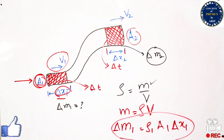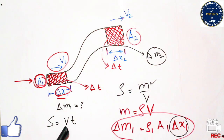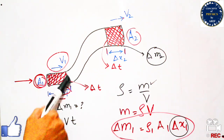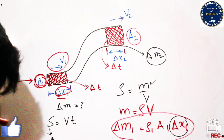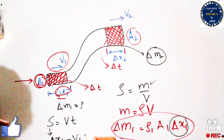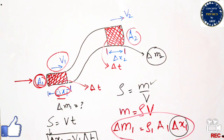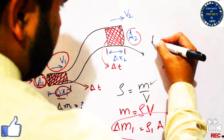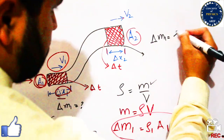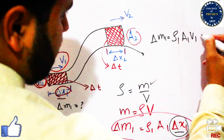We can simplify this using the relation: distance equals velocity multiplied by time. For a small time delta t, the distance covered is delta x1 equals v1 multiplied by delta t. Substituting this into the expression for delta m1, we get delta m1 equals rho1 times A1 times v1 times delta t. This is the first expression for delta m1.